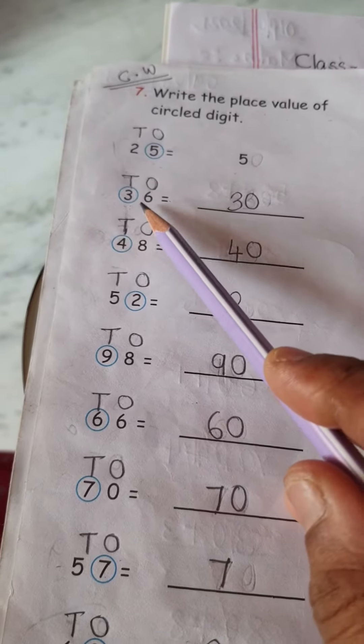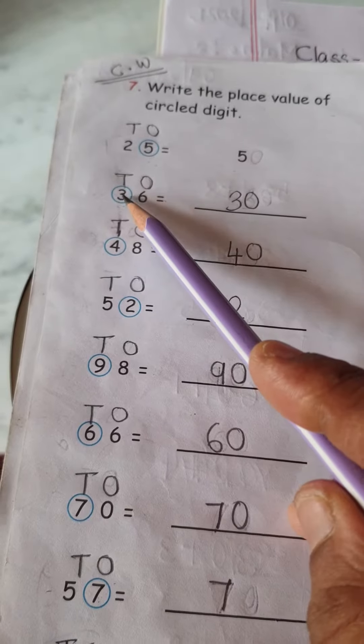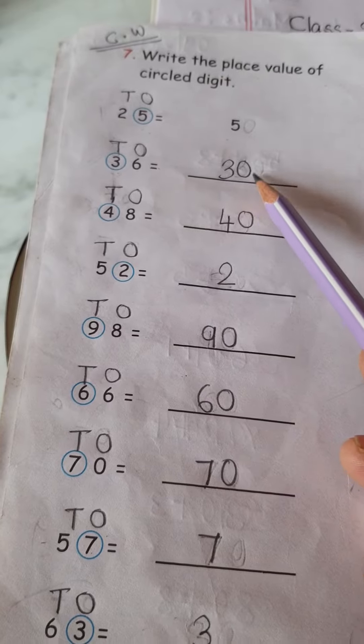Next one, 3, where is the 3? 3 is under 10's place. So what is the place value of 3? 30, so write here 30.